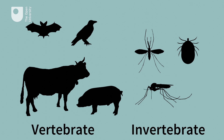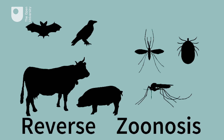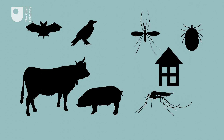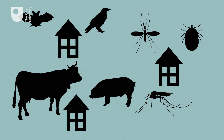It's also possible for humans to transmit diseases to animals, and in this context the zoonoses is termed a reverse zoonoses. The risk of infection with zoonoses increases as the human population continues to grow and people live in greater proximity to animals.